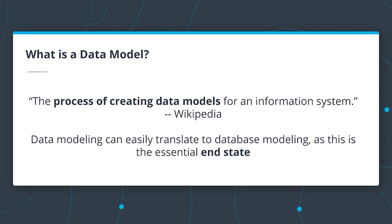Data modeling can easily translate to database modeling, as this is the essential end state. Data modeling can be considered an abstract process, but as you continue the process of creating data models, you will begin modeling the data for a particular informational system. Data modeling can easily be called database modeling, as this will be your final state — the home of your data. The process of data modeling is to organize data into a database system to ensure that your data is persisted and easily usable by you and your organization.